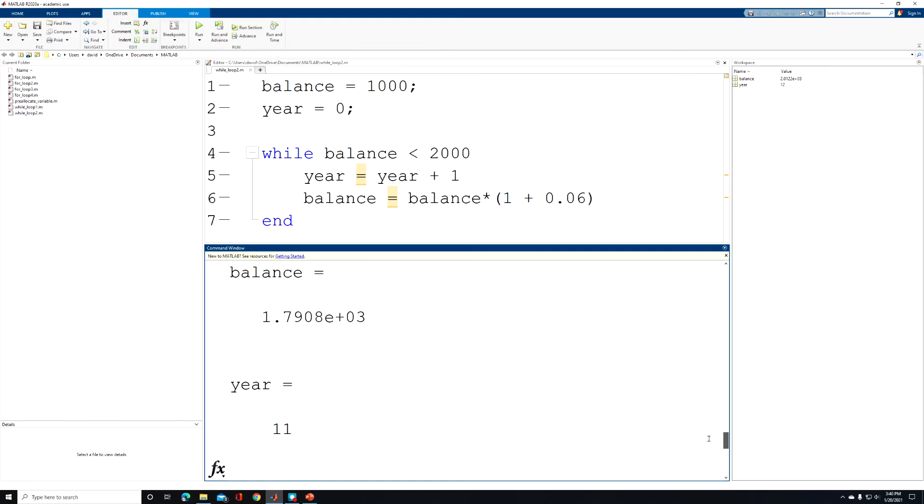Now when we get to year 12, our balance exceeds our goal of double our initial investment of $2,000 and our while loop ends. So I hope this provided you with a good introduction to the while loop where we update the value of a loop variable during each loop pass.